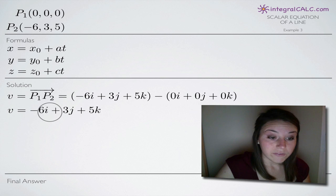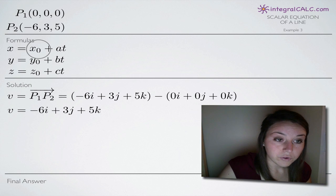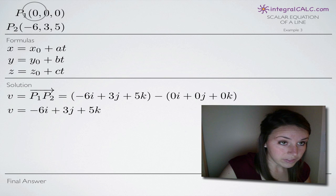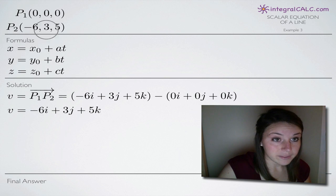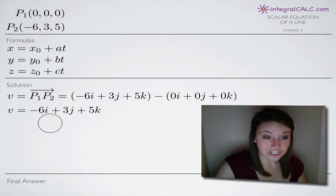So given this vector now, we're going to use this and P₁ to find our scalar equations using these formulas here. So remember for x₀, y₀, and z₀, we'll use x, y, and z. We will pull a, b, and c from the coefficients on i, j, and k respectively.